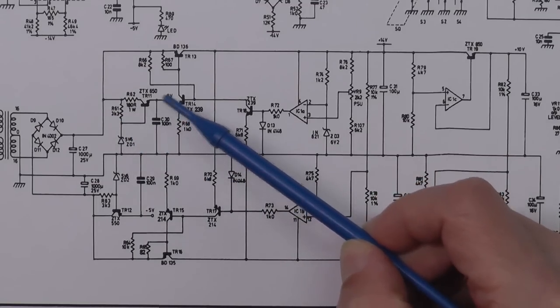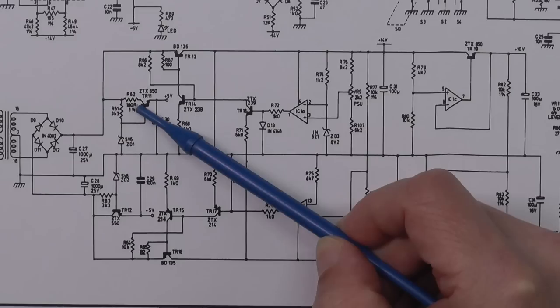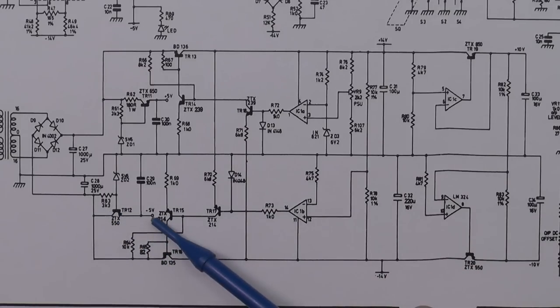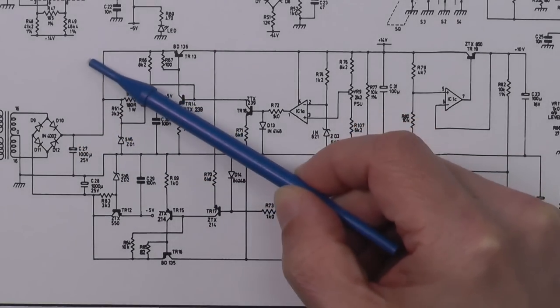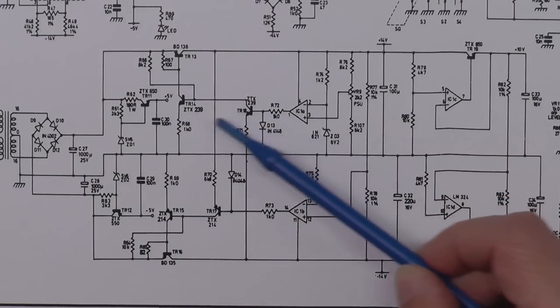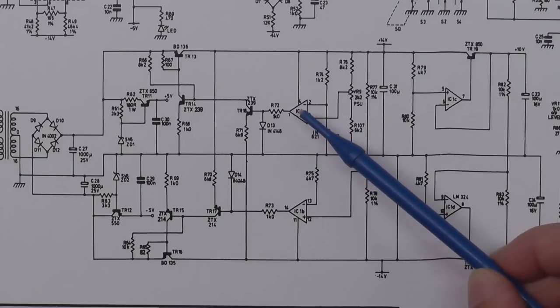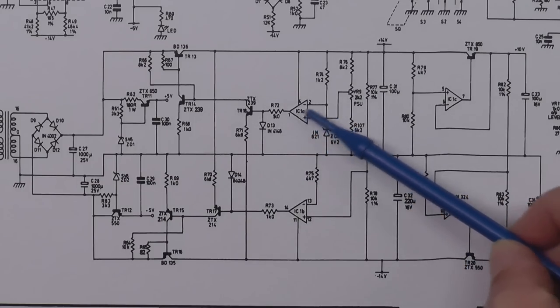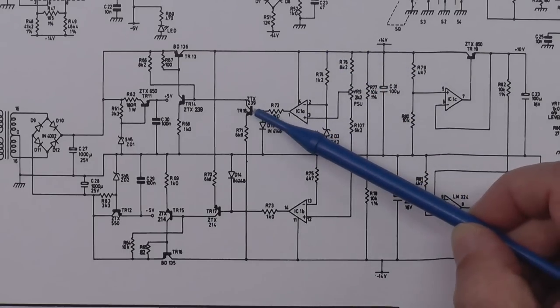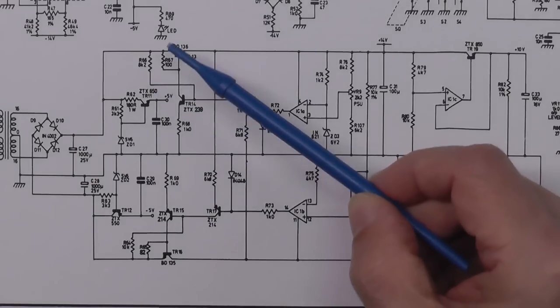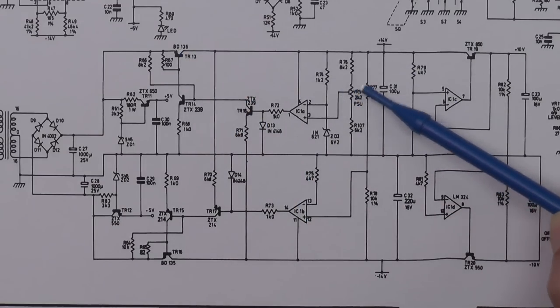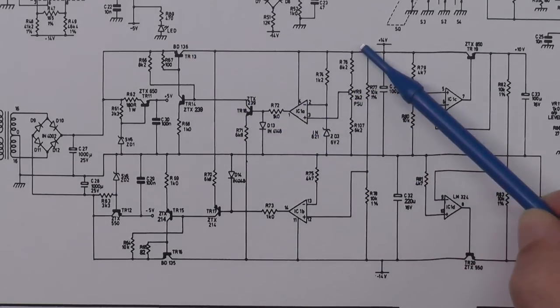First it comes to this little circuit here: a 5.6 volt zener and a resistor driving the base of this transistor. That generates a plus 5 volt regulated DC supply. Similarly on the negative side, another 5.6 volt zener, transistor, and a negative 5 volt supply.